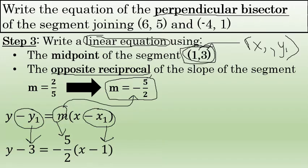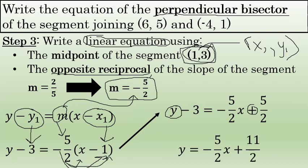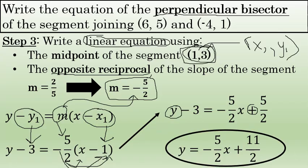Before calling this my final answer, I'll transform this equation into slope-intercept form. I'll isolate y and write it as y equals mx plus b — oftentimes the best way to express the equation of a straight line. That can be accomplished by distributing negative 5 halves: you'll have negative 5 halves x, and then negative 5 halves times negative 1 is positive 5 halves. Then, adding 3 to both sides to isolate y, 5 halves plus 3 is 11 halves. The equation of the perpendicular bisector of the segment joining 6, 5 and negative 4, 1 in slope-intercept form is y equals negative 5 halves x plus 11 halves.